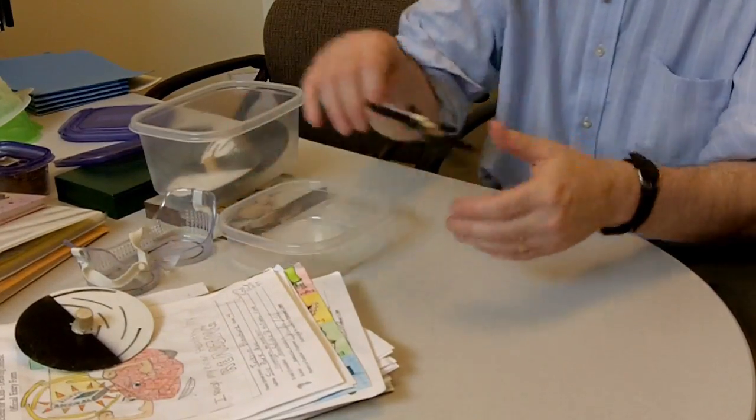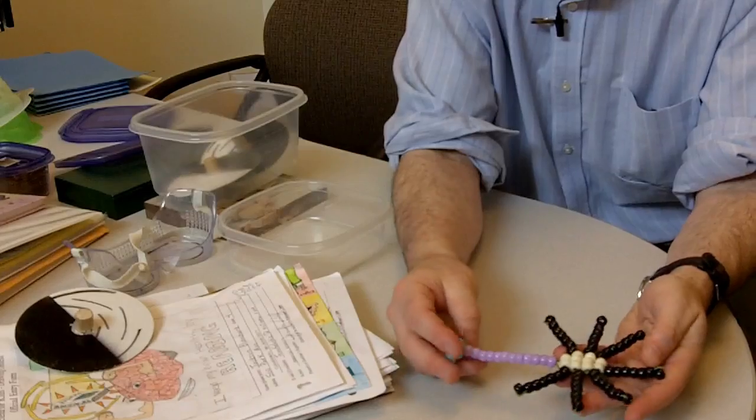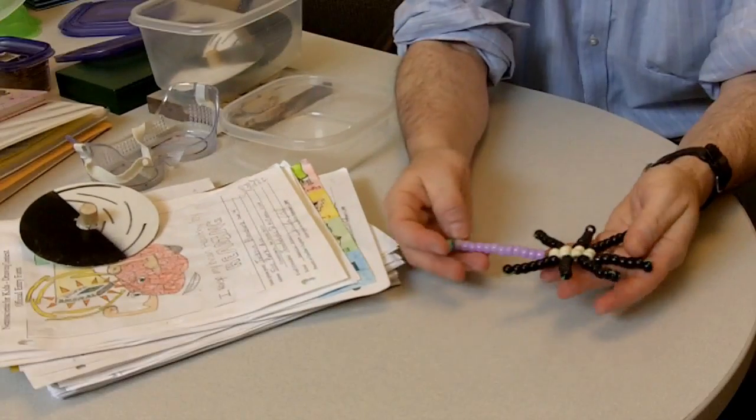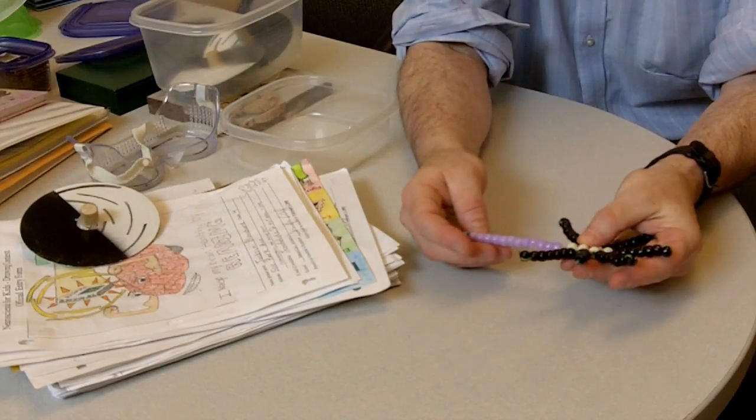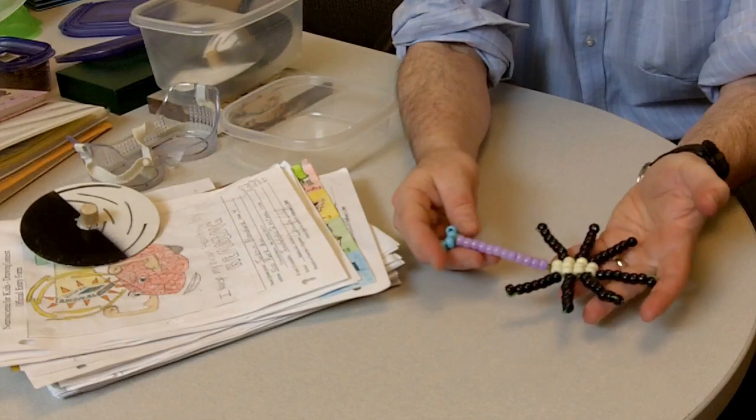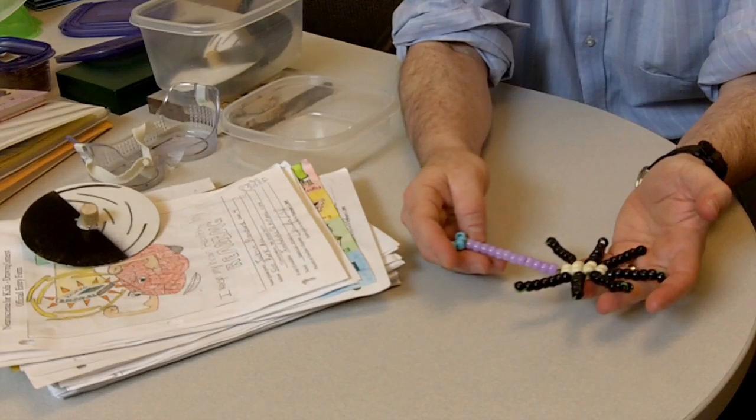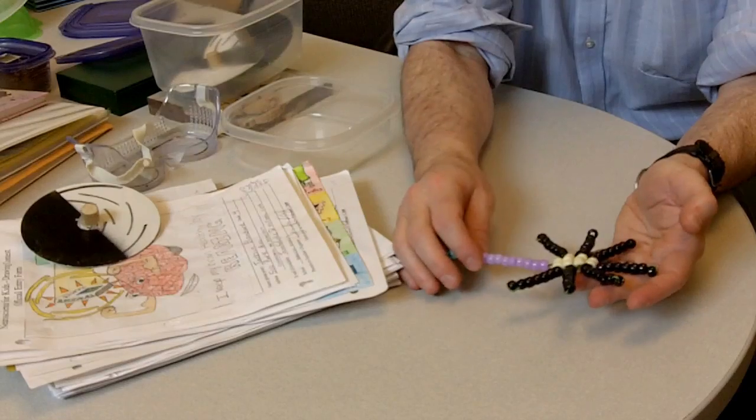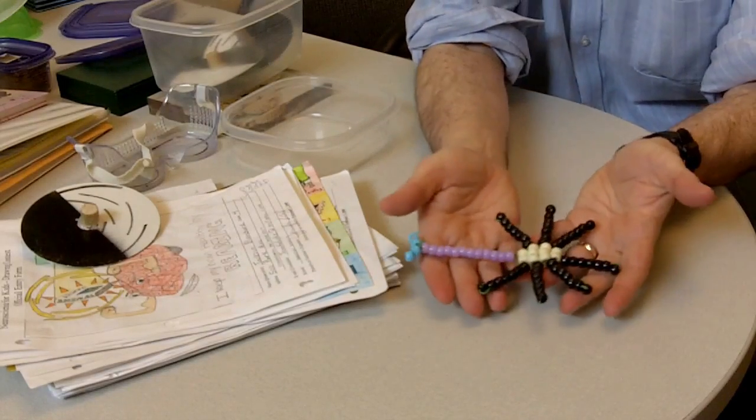Another activity that kids can do is they can make these little models. This is a beady neuron, so I give the pattern, and the kids are somewhat familiar with being able to work these different patterns, and they can create themselves a neuron out of beads.